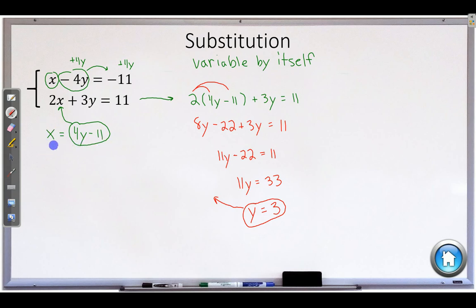And because we are after x, we might as well take the equation that says x equals. So x equals 4y. But now I know what y is. y is 3. Minus 11. So 4 times 3 is 12. Minus 11. x is equal to 1.